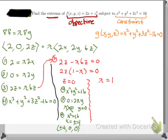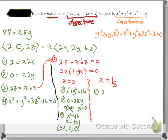Now I'll handle the case λ = 1/3 — actually, let me correct that: when I factor equation 3, I get 1 − 3λ = 0, so λ = 1/3, not 1. Going back to equation 1 with λ = 1/3: 2 = (1/3)·2x, which gives x = 3.